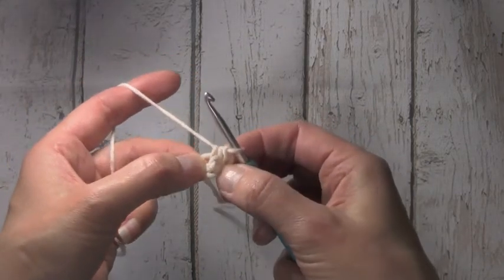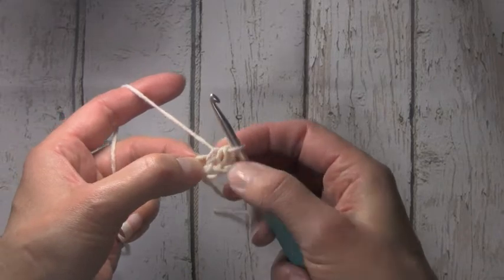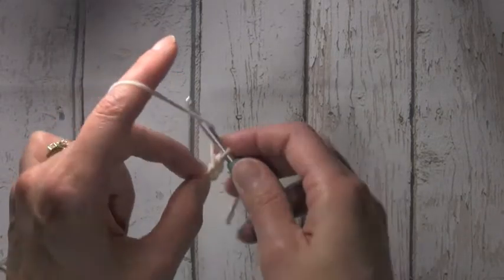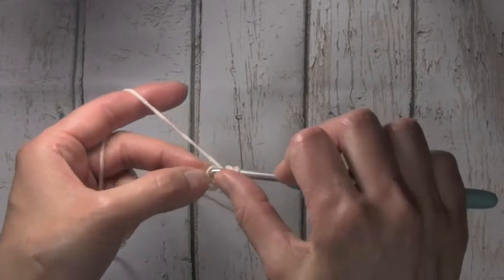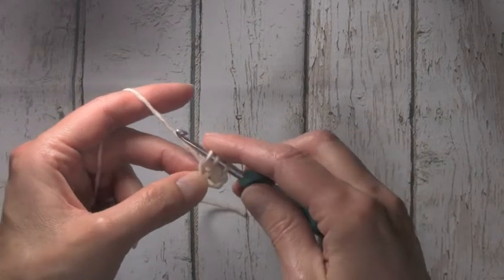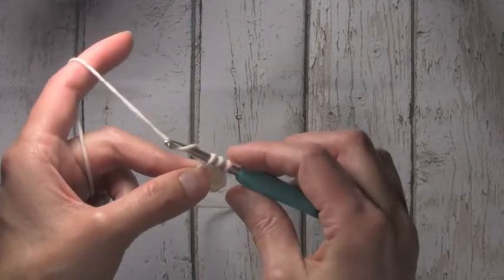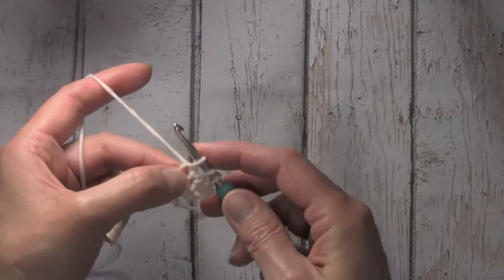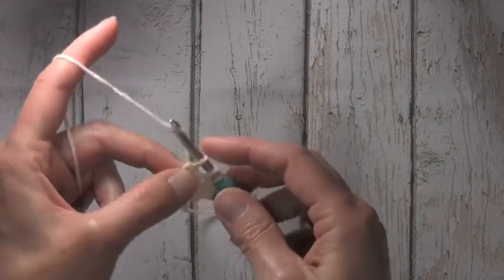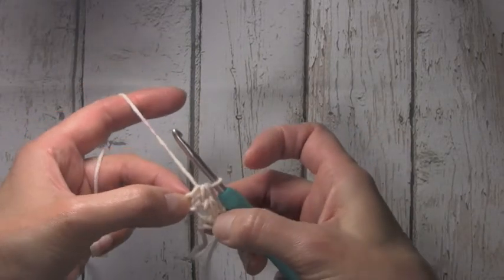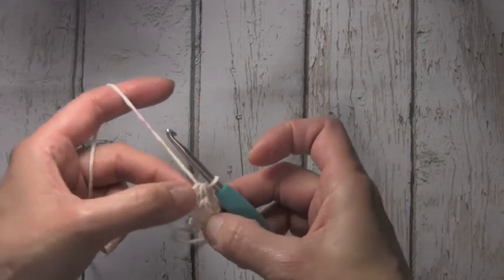I've grabbed onto that loop that I'm going to work my next half double into and I'm going to do the same thing I just did. Yarn over, insert my hook into that loop, yarn over, pull up a loop, yarn over, pull up a loop. Now remember that is going to be my next chain. I'm going to grab onto that, yarn over, pull through all three loops. I've now completed two half double crochets.